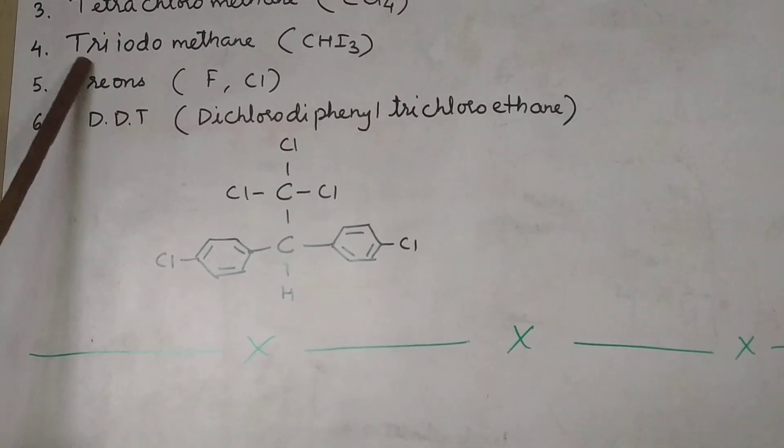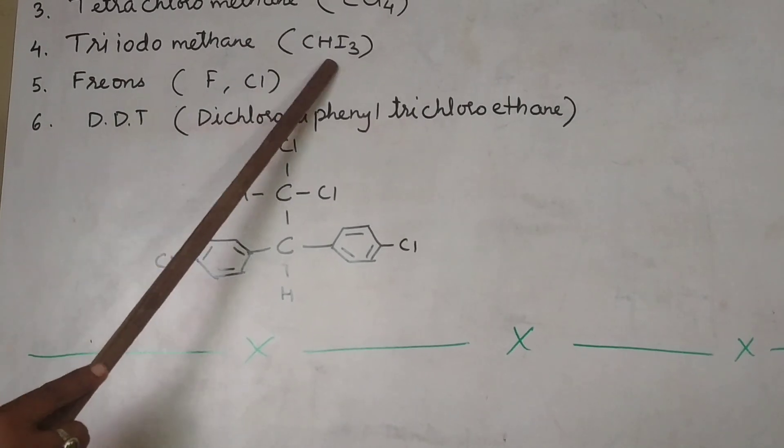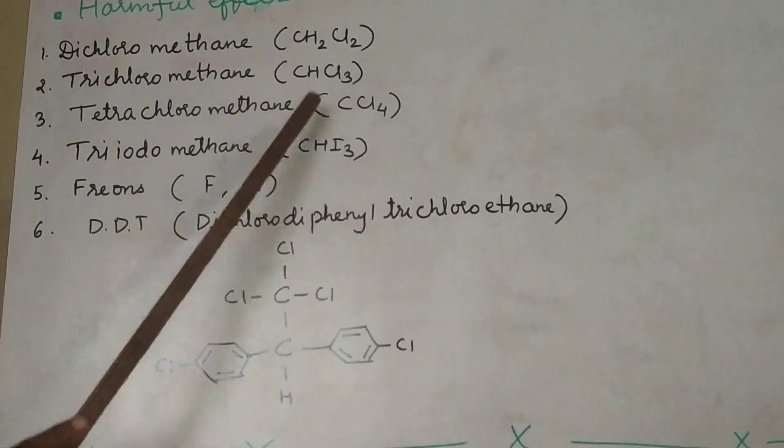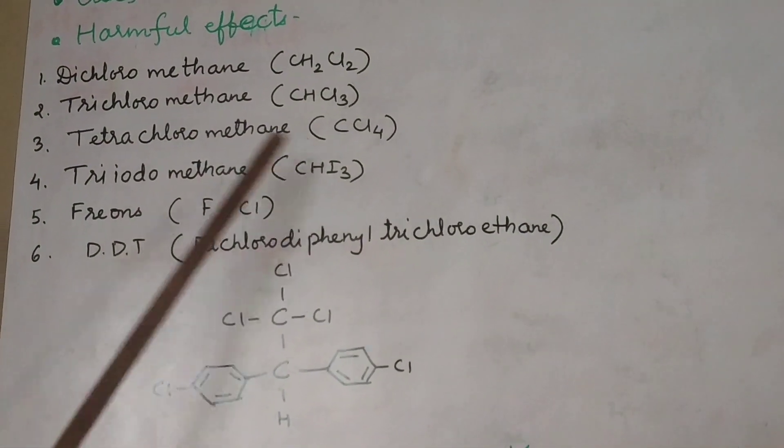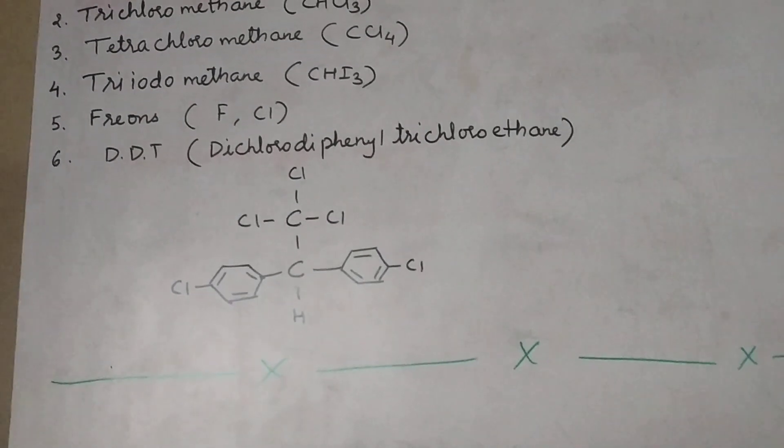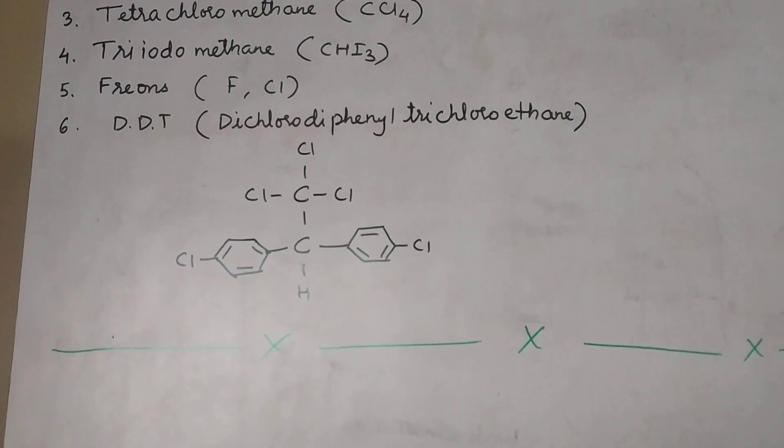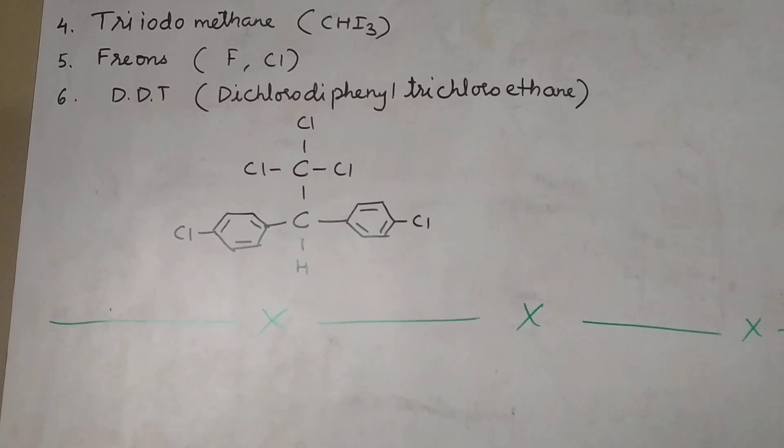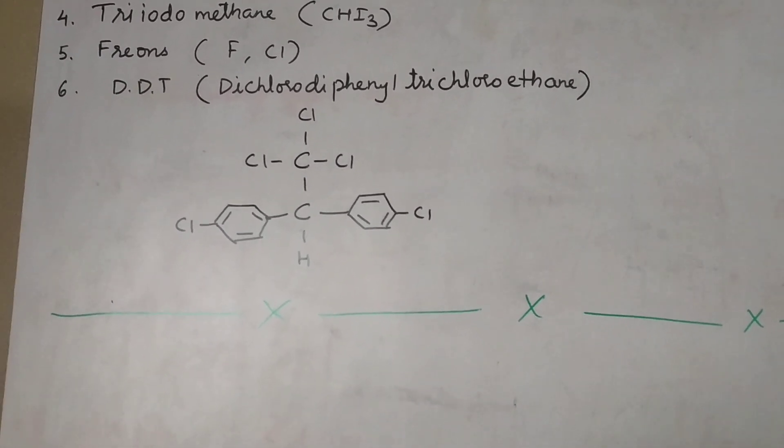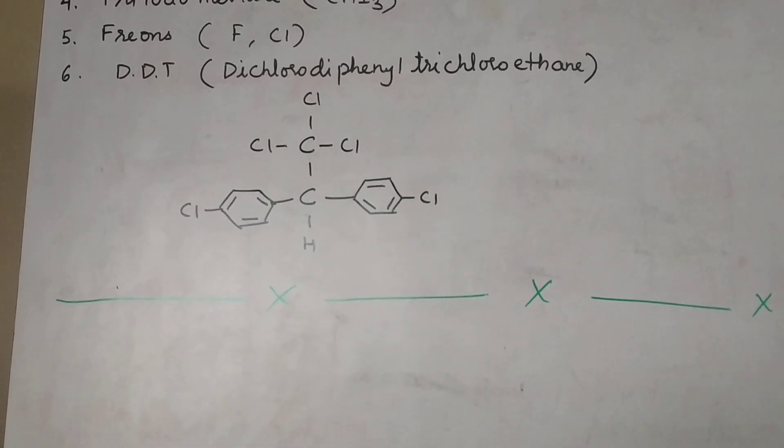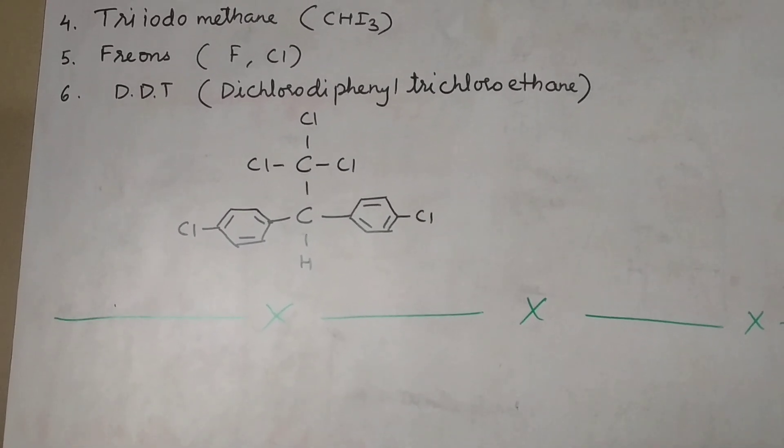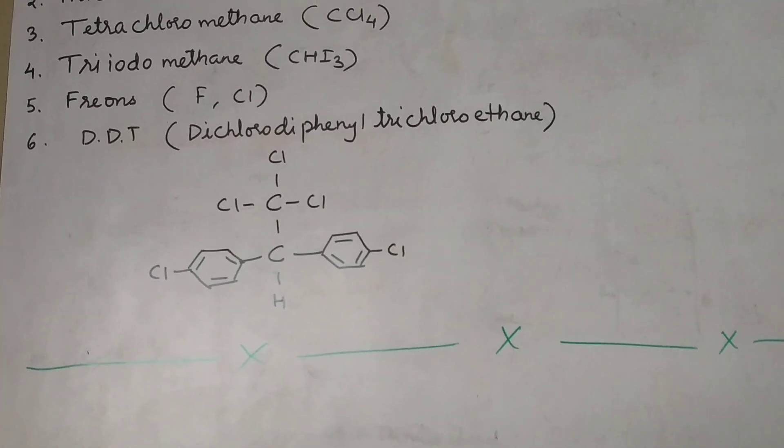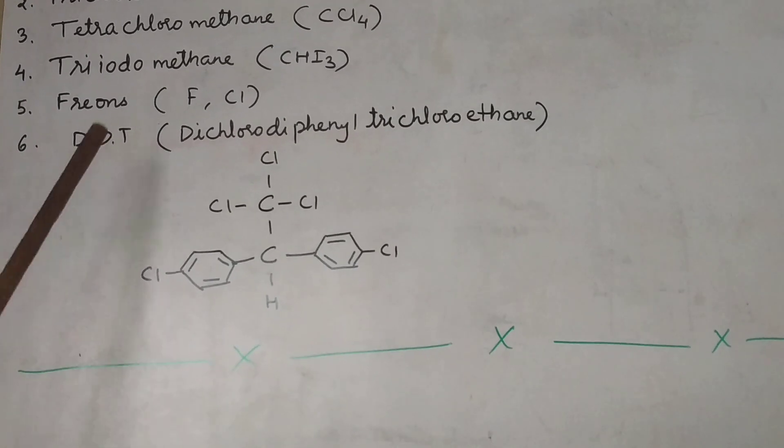Next compound is triiodomethane CHI3 also called as iodoform. See the two compounds: CHCl3 chloroform, CHI3 iodoform. Iodoform has uses that it is used as an antiseptic for wounds. It is used as antiseptic to clean that wound and it has harmful effects as if it is inhaled for a longer time, it can cause respiratory problems. It can cause dizziness and depression in the central nervous system.